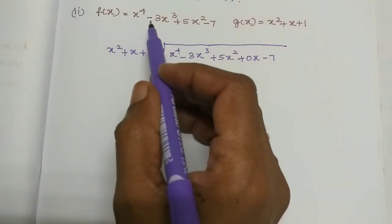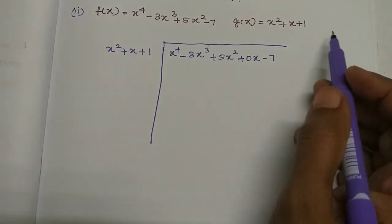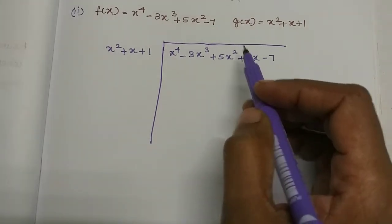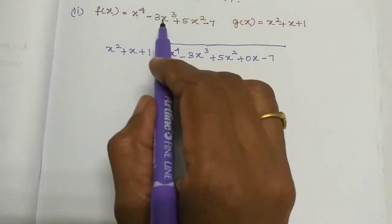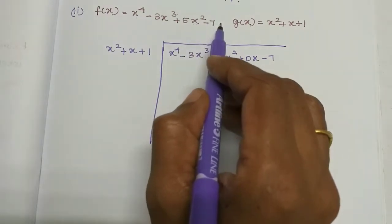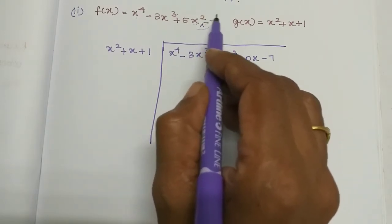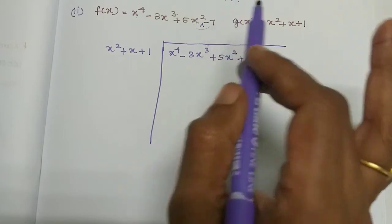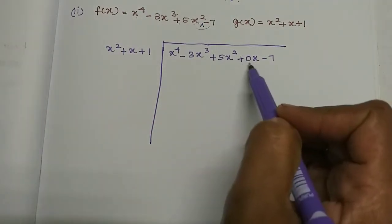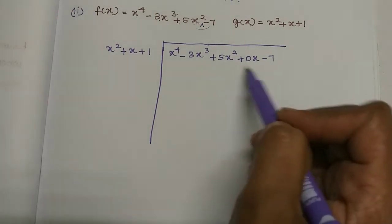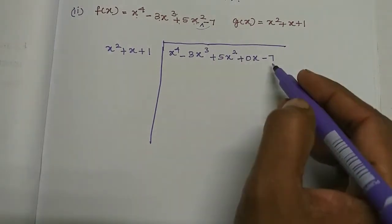F of x equals x to the power 4 minus 3x cube plus 5x squared minus 7. G of x equals x squared plus x plus 1. Now we need to divide.